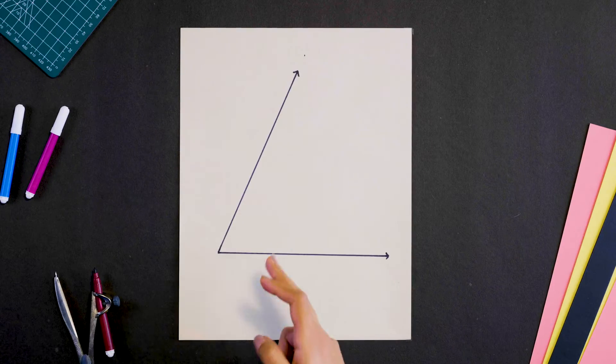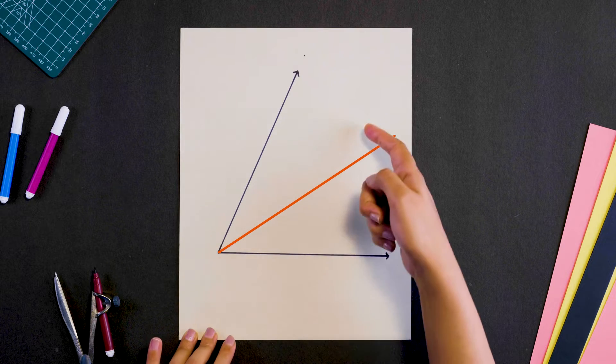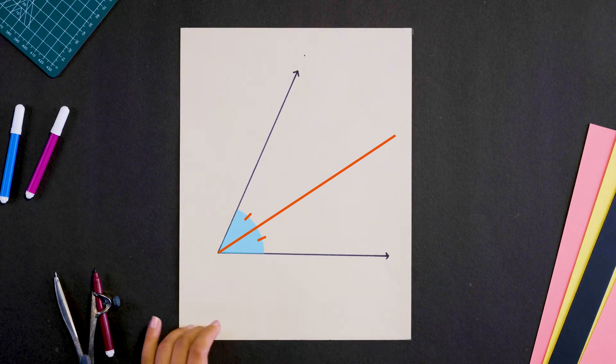Let's begin our constructions. Here's an angle. How can we draw its angle bisector? That is, drawing a line which divides the angle in half. Let's start.